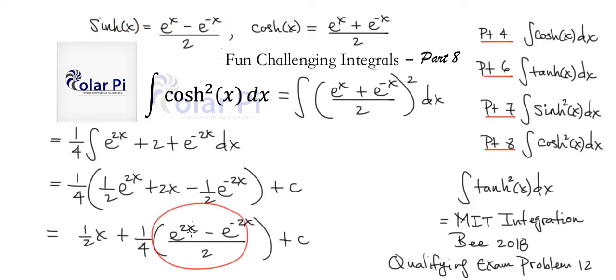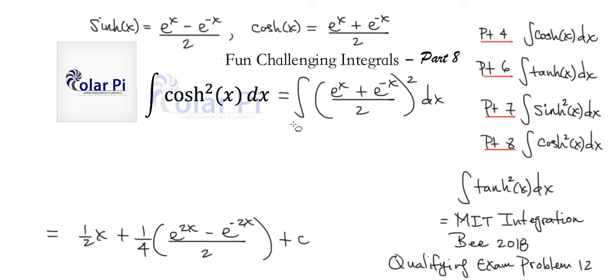So therefore, this is just sinh 2x and our final answer is going to be 1/2 x plus 1/4 of sinh 2x and then, of course, plus c.